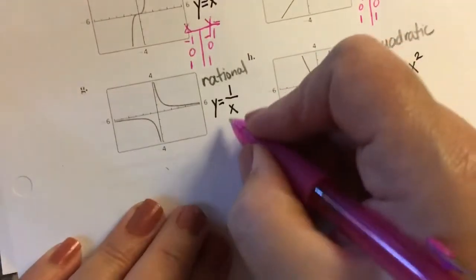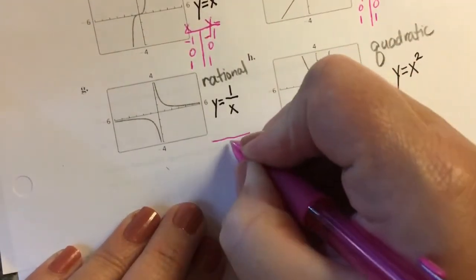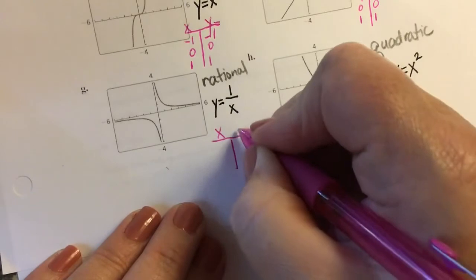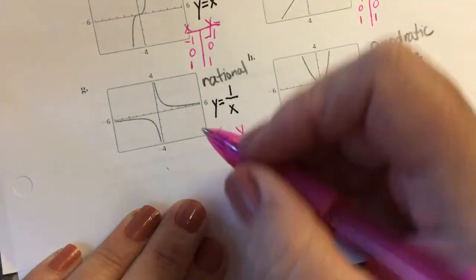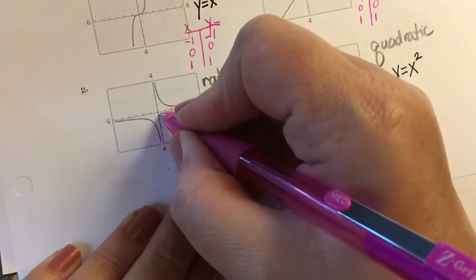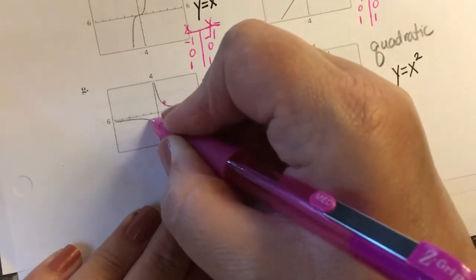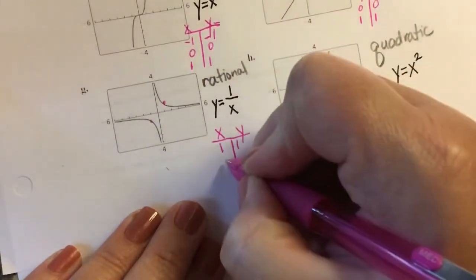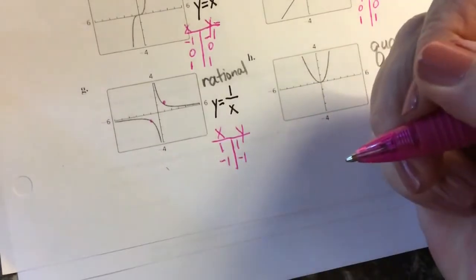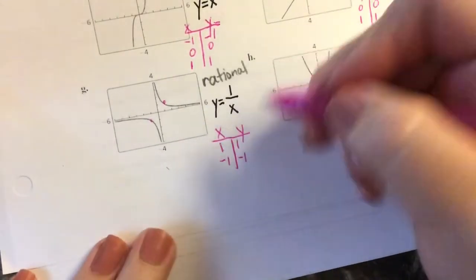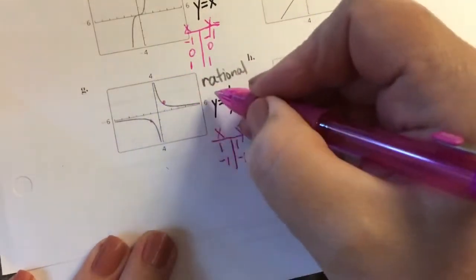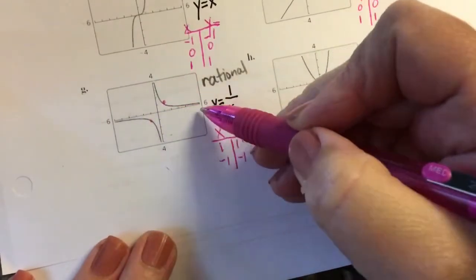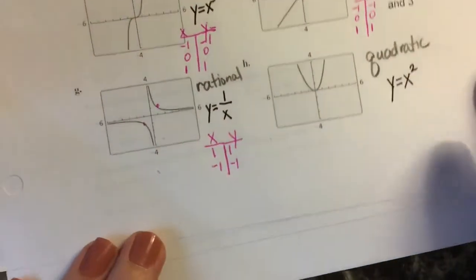Moving on to the next one, y equals 1 over x, we are going to use, I think we only use two ordered pairs and drew curves through those two ordered pairs. We're going to use (1, 1) and (-1, -1). So if we know that it is a rational function then we're going to put these two dots (1, 1) and (-1, -1) and then we'll draw curves through those two dots that kind of hug the axes.